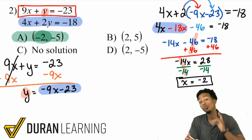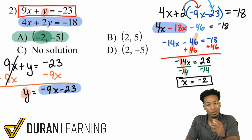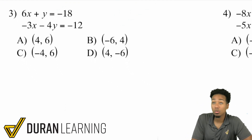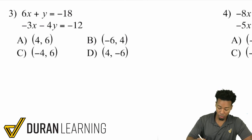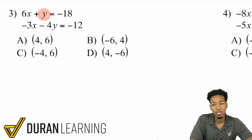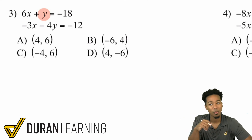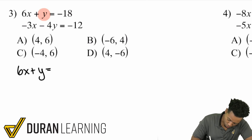Notice that it's only necessary to solve for Y when more than one answer choice has that same X value. If there are two answers with the same X, keep going; if not, you're done. For problem 3, we have 6X plus Y equals negative 18 and negative 3X minus 4Y equals negative 12. Substitution is wise here because Y has a coefficient of 1 — let's get it by itself.